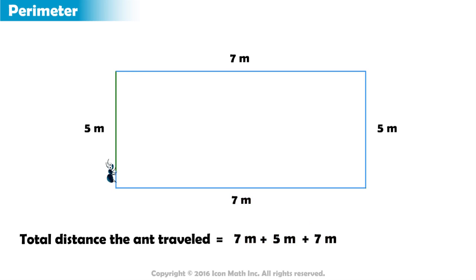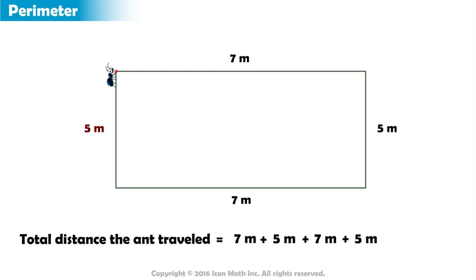The ant now faces upwards and starts moving in a straight line until it finally reaches the top left corner, the original starting point. The ant stops here. In total, the ant has traveled a distance equal to the length of all sides of the rectangle. So we have 7, plus 5, plus 7, plus 5. Adding the numbers gives us a total of 24 meters.